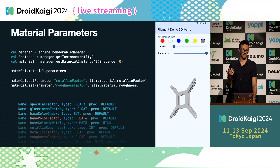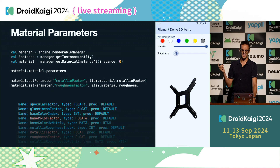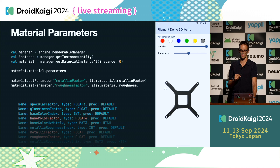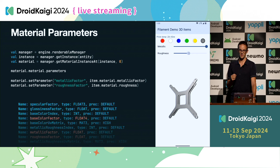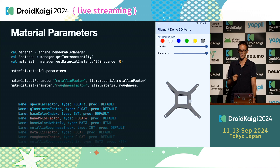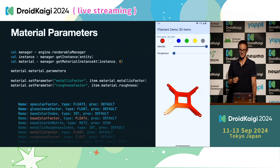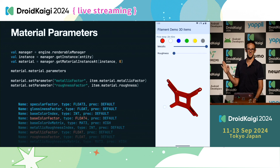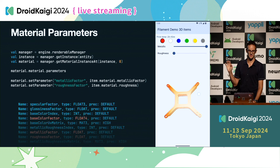By just adding a couple of sliders in the UI, you can already see how making the model more or less reflective or rough changes the reflections. You can see how the light bounces in a different way depending on how rough or how metallic it is. This is all made by Filament, and it's done with just those two lines of code.